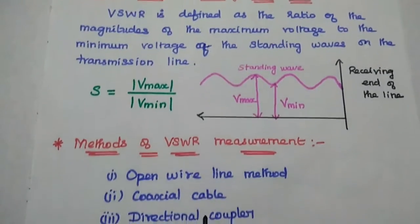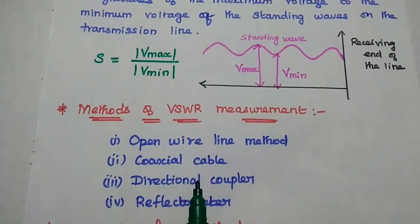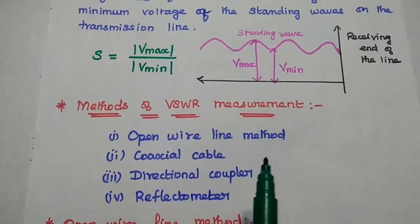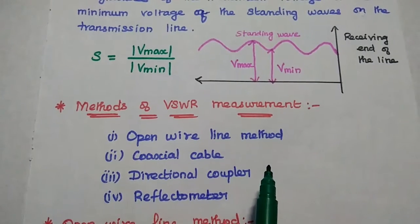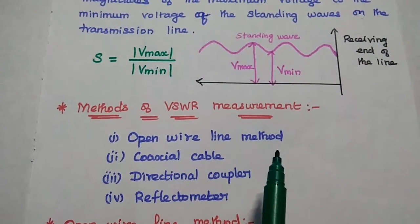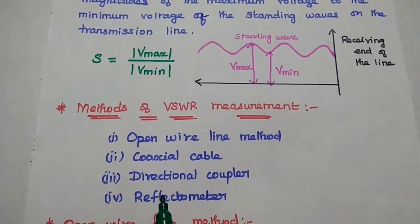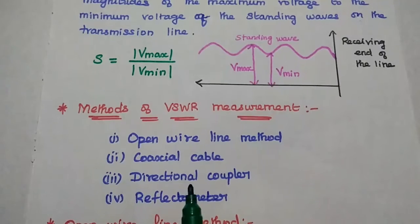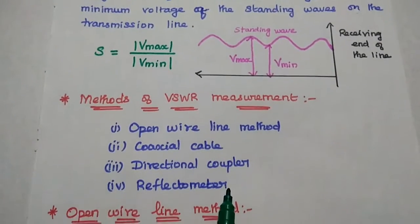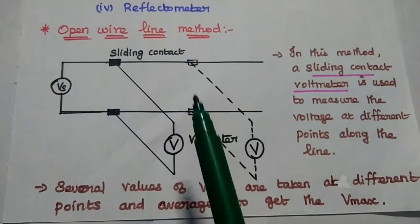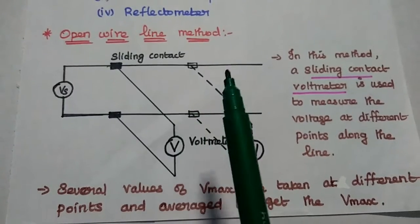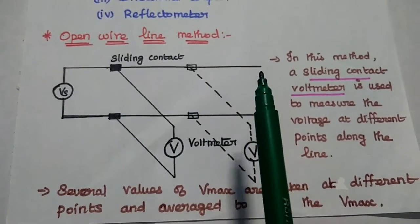There are 4 methods used to measure the VSWR on the transmission line: open wire line method, coaxial cable, directional coupler, and reflectometer. The first one is the open wire line method.